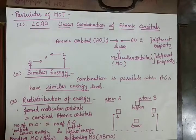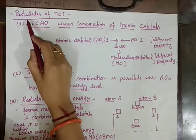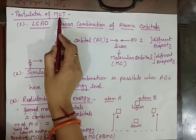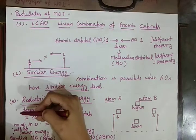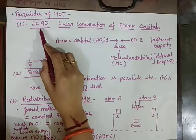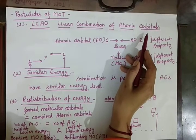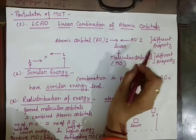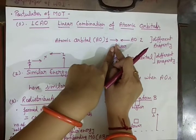Hello everyone, welcome to the second part of the video on molecular orbital theory. In the first part, we started the postulates of molecular orbital theory and discussed three postulates. First was LCAO, that is linear combination of atomic orbitals, according to which atomic orbitals can overlap linearly.